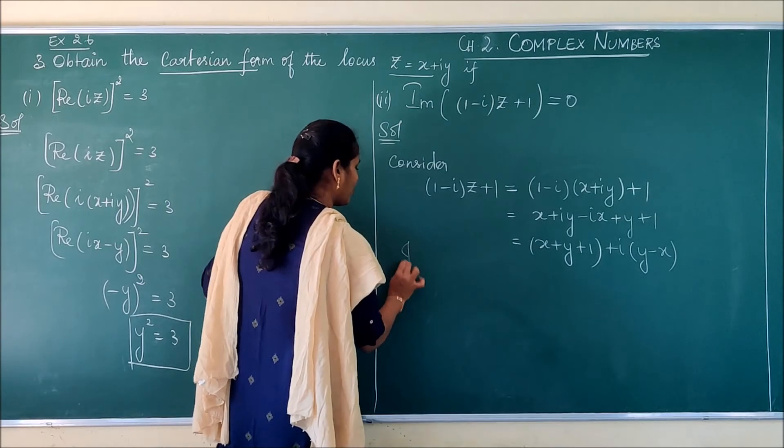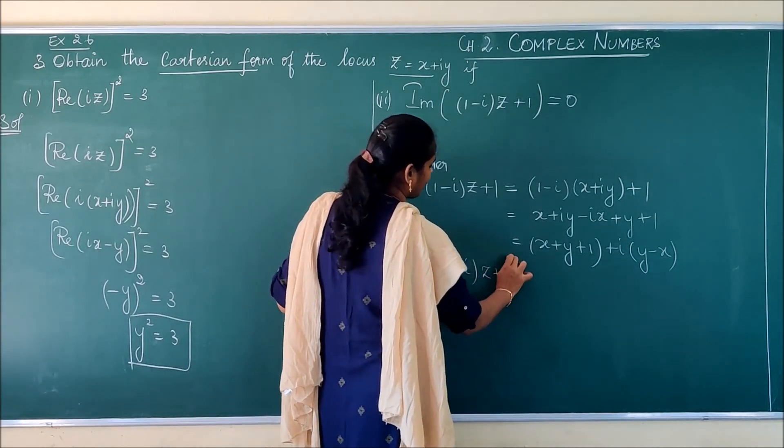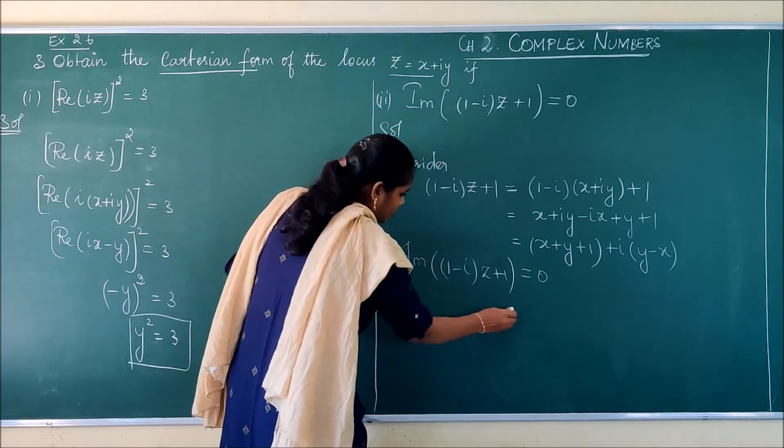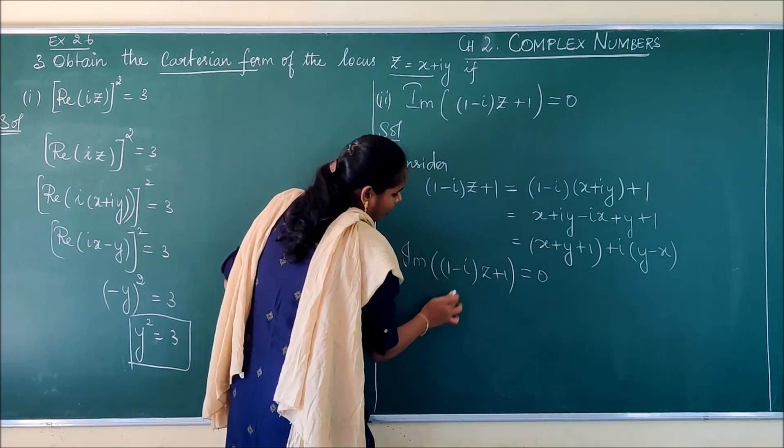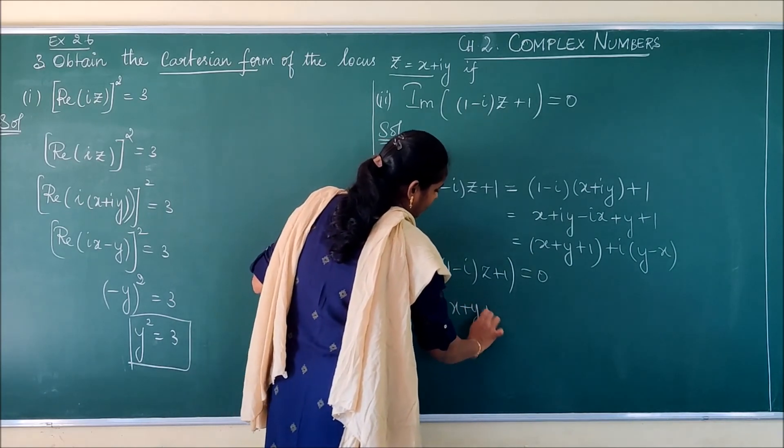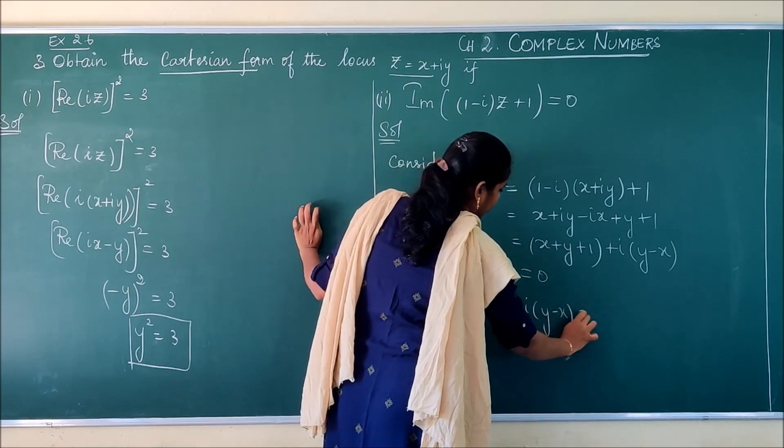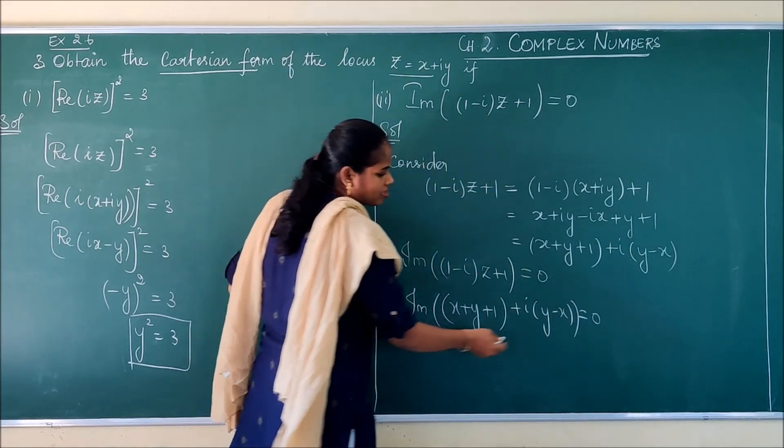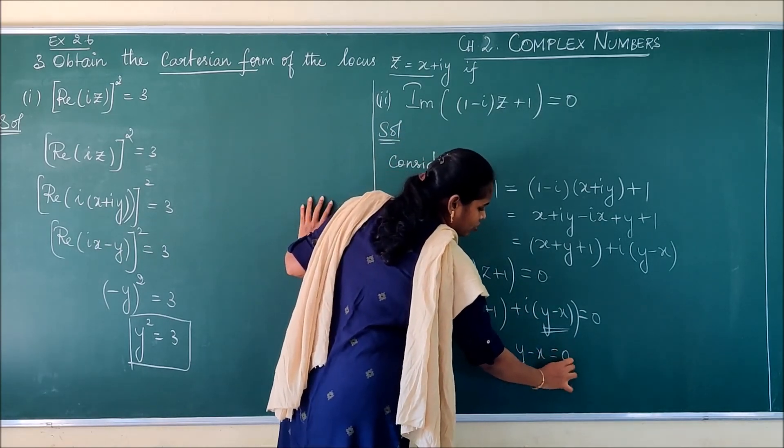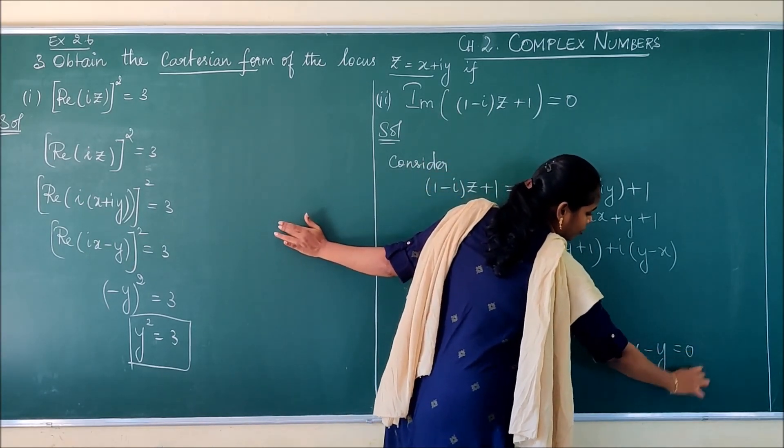They have given imaginary part of (1 minus i)(z plus 1) equals 0. So I am going to substitute: imaginary part of x plus y plus 1 plus i(y minus x) equals 0. The imaginary part of this is only this. So it gives us y minus x equals 0, and x minus y equals 0. Thank you.